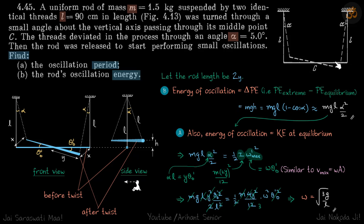In the problem we are given a rod that is hung by two strings. The string is twisted by an angle alpha. We need to find what is the oscillation period and what is the rod's oscillation energy.